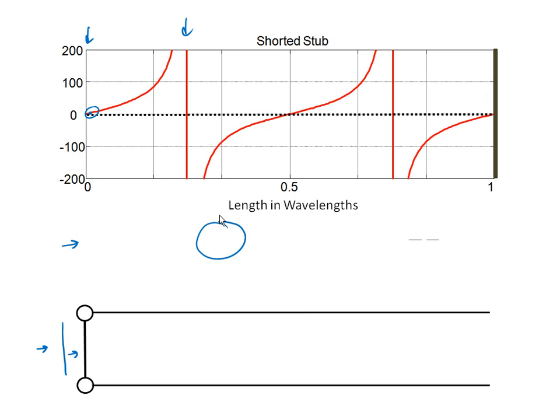So as you can see, you really can tune the length of the transmission line from an inductor to a capacitor and back again just by changing the length of the stub.